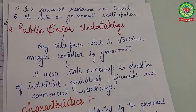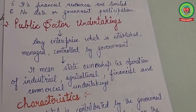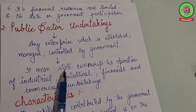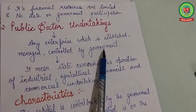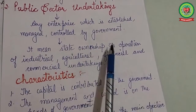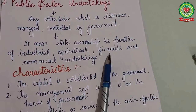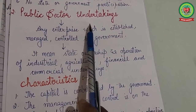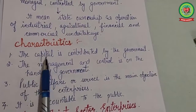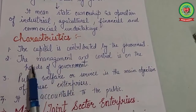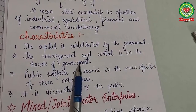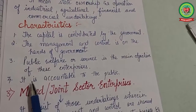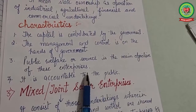Next are public sector undertakings. Examples include Railways, Oil and Natural Gas Corporation, and Steel Authority of India Limited — all owned or controlled and managed by the government. This means state ownership and operation of industrial, agricultural, financial, and commercial undertakings. Characteristics: capital is contributed by the government, management and control is in the hands of the government, the main objective is public welfare rather than earning profits, and operations are accountable to the public.